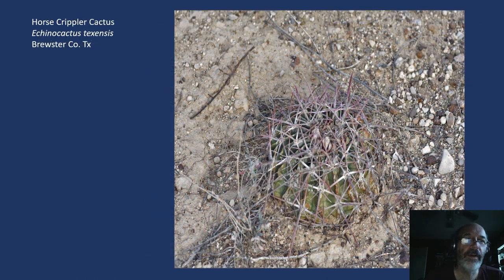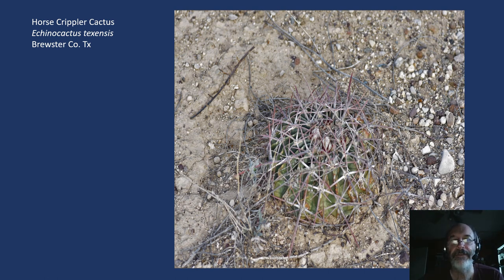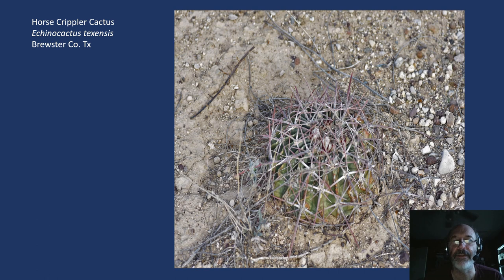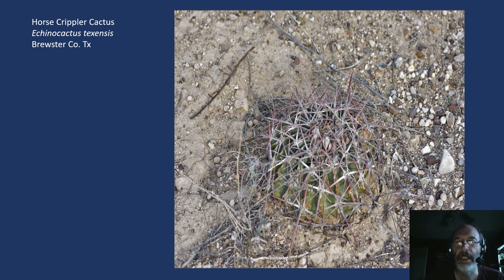Then we have the horse crippler cactus, Echinocactus texensis. This can get up to a couple of feet across, called horse crippler for very good reasons — though I don't know that it actually cripples horses. These spines are extremely stout and the plant itself is tough. You can just about stand on it and not hurt it; in fact, in tennis shoes, you're in greater danger of being injured by the plant than of injuring the plant. I have yet to see this one in bloom, but it's high on my list of plants to have in the garden.